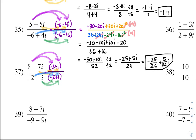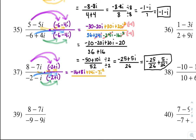Up top: 8 times negative 2 is negative 16, 8 times i is positive 8i. Negative 7i times negative 2 is 14i, and negative 7i times i is negative 7i squared. All over — blue: negative 2 times negative 2 is 4, negative 2 times i is negative 2i. Green: negative i times negative 2 is positive 2i, and negative i times i is negative i squared.